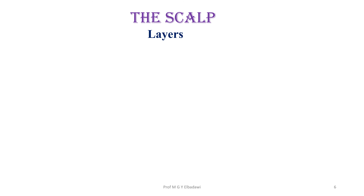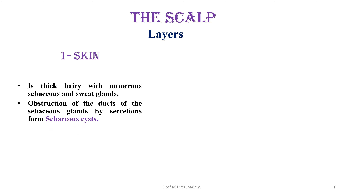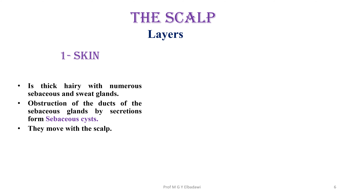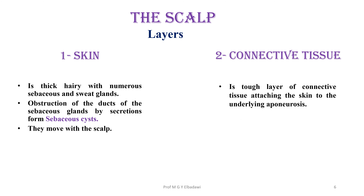Starting with the skin, it is thick and hairy with numerous sebaceous glands. Obstruction of these sebaceous glands usually results in forming sebaceous cysts, which usually move with the scalp. The second layer, the connective tissue, is a very tough layer attaching the skin to the underlying aponeurosis. It has the richest cutaneous blood supply in the body.